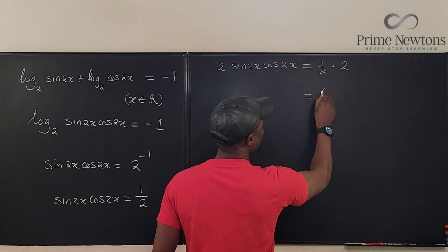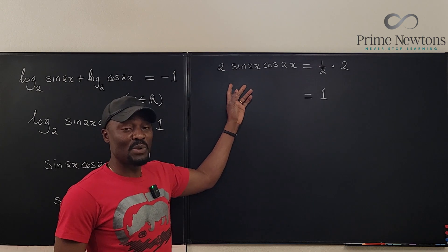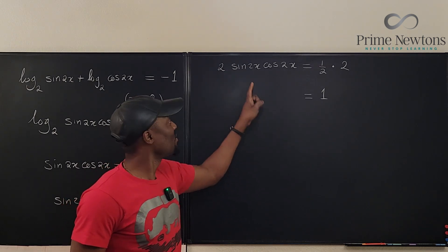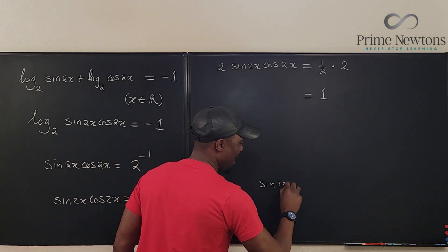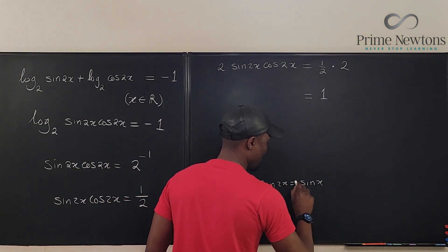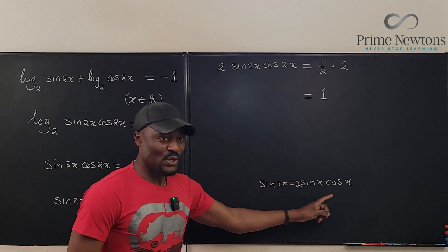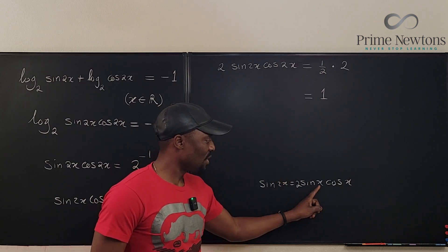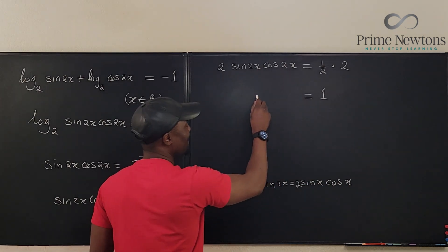And when I do that, the right hand side gives me 1 and this side gives me the double angle formula for sine 4x. You see, remember that sine 2x equals 2 sine x cosine x. So when you double this, when this becomes 4x, this will become 2x, 2x, and that's what's going on here. So I can write this clearly as sine 4x. This is the hardest part of this exercise. Once you're able to figure this out, you can solve the rest of it.